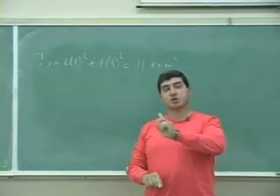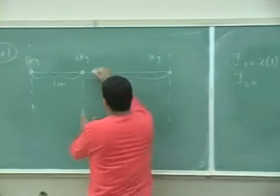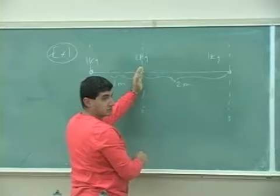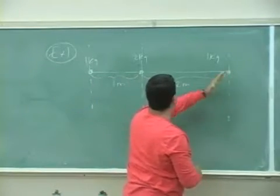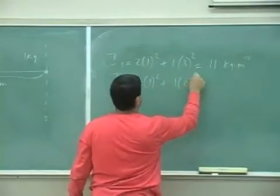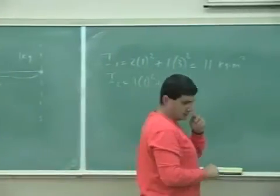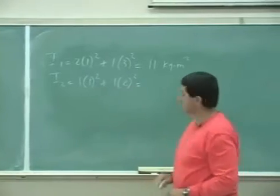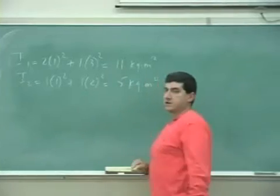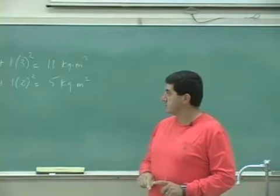How about the moment of inertia about axis 2? So 1 times 1 squared, right? Plus 1 times 2 squared. See? So what are you going to get there? You're going to end up with 5. Ah, so it's about twice as easier to rotate it around that point.